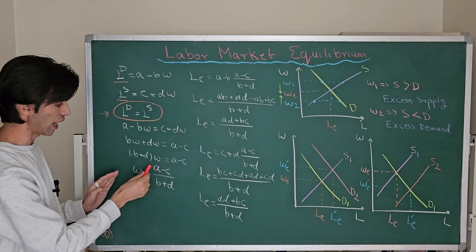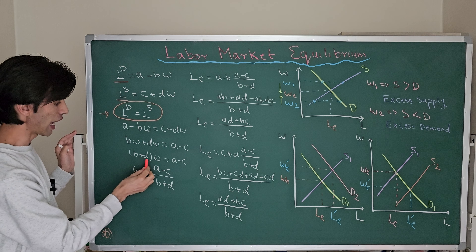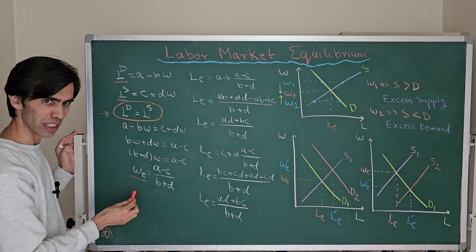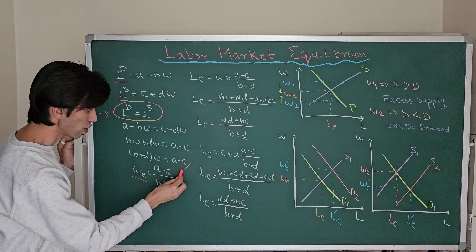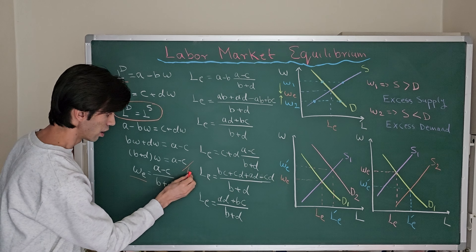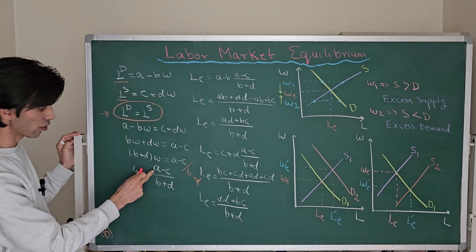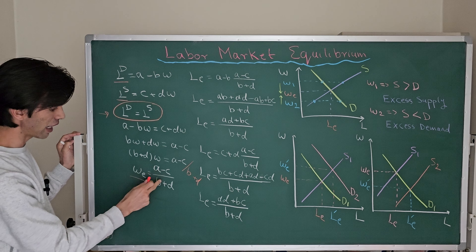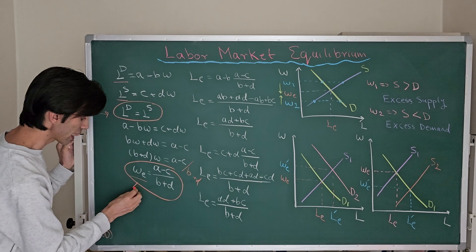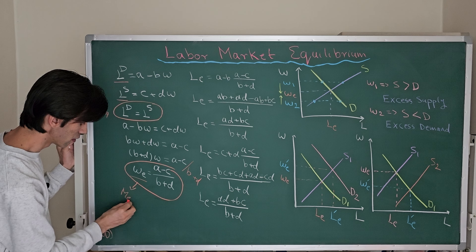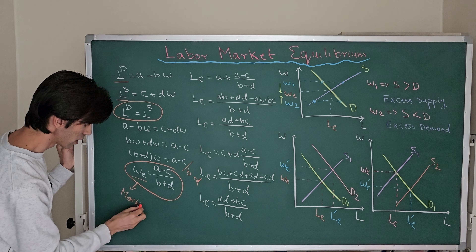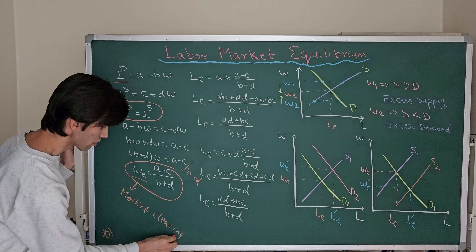We factor out W to get (B + D)W = A − C, then divide both sides by (B + D). The result is W = (A − C) / (B + D), and this is called the market clearing wage.